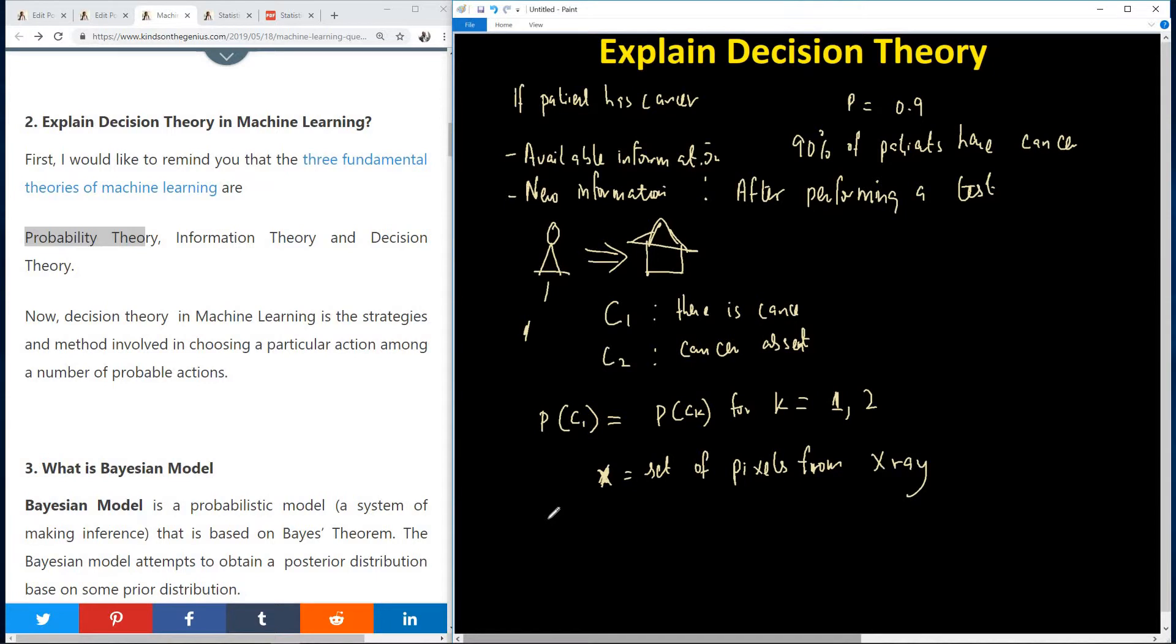So this X now is a new information. So we also need to use it. So we're actually going to calculate probability that the patient have cancer, P of C1 given X. So now, in this case, we have probability that the patient have cancer even before he comes in. We have probability that the patient have cancer now after we've performed an X-ray procedure.